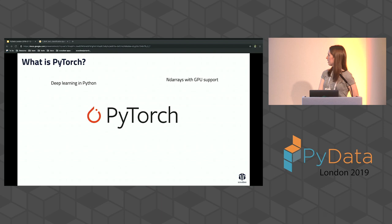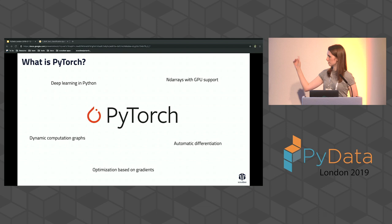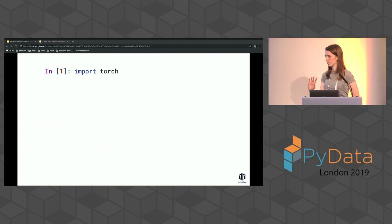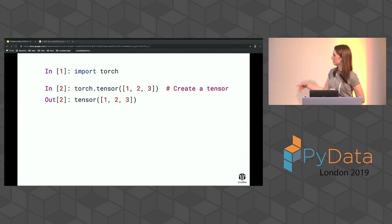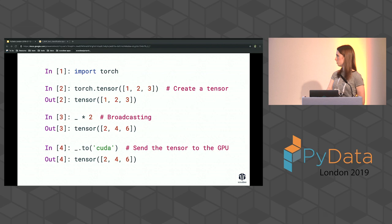PyTorch is a deep learning library in Python. You can think of it as N-dimensional arrays with GPU support — it looks a lot like NumPy arrays but you can compute gradients on them. It does automatic differentiation and optimization and has dynamic computation graphs. You create tensors just like NumPy arrays, broadcasting works the same way, and you can send a tensor to a device — either CPU or CUDA for the GPU.